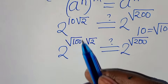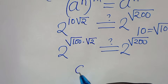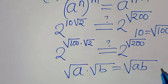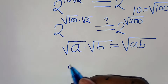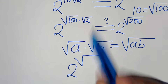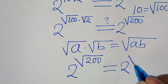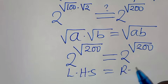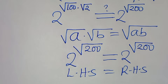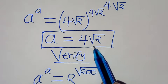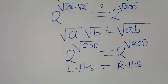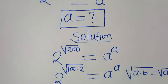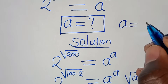Using the property that square root of a times square root of b equals square root of a times b, the left-hand side becomes 2 to the power of square root of 100 times 2, which is 2 to the power of square root of 200. The left-hand side equals the right-hand side, verifying that a equals 4 square root of 2 satisfies the equation. Please like this video and subscribe — see you in the next video!